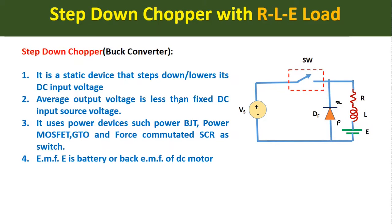Here the average load voltage VL is less than the fixed DC input source voltage VS in the step-down chopper. The step-down chopper uses power devices such as power BJT, power MOSFET, GTO, and force-commutated SCR as a switch — any of these semiconductor devices can be used as the switch in the chopper. One EMF E is also connected at the load, which can be a battery or the back EMF of a DC motor.